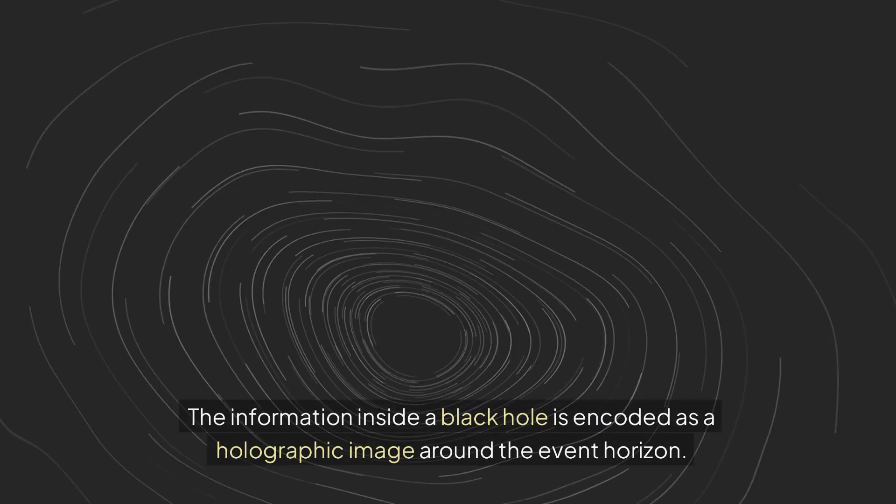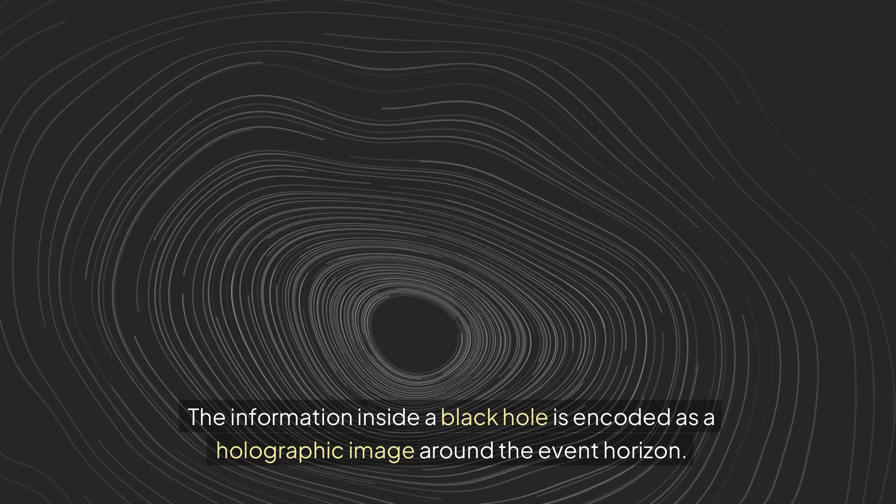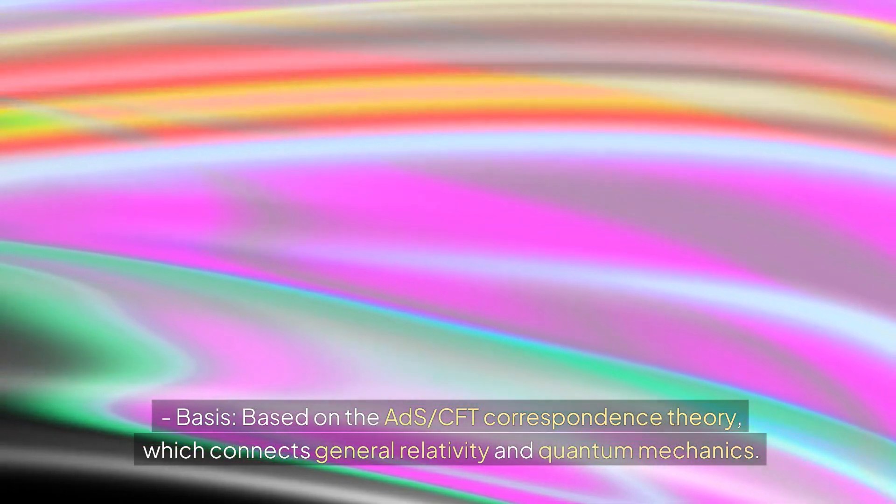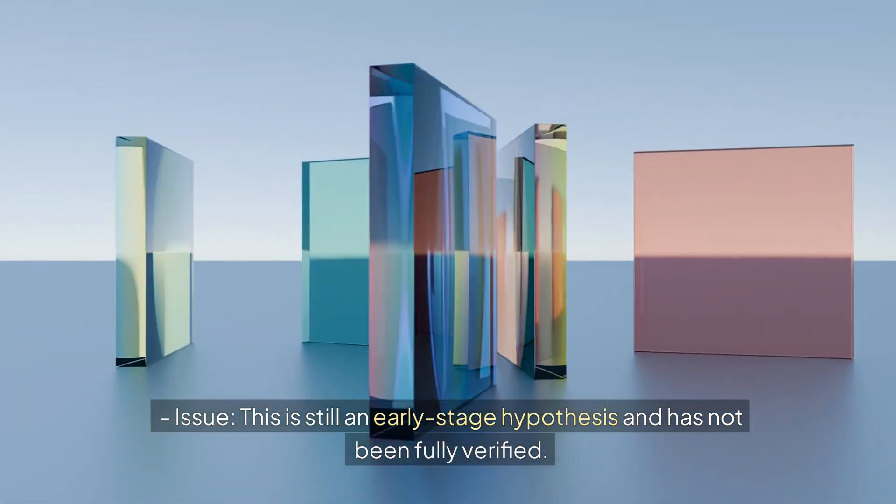Holographic hypothesis: the information inside a black hole is encoded as a holographic image around the event horizon. Based on the ADS-CFT correspondence theory, which connects general relativity and quantum mechanics. This is still an early-stage hypothesis and has not been fully verified.